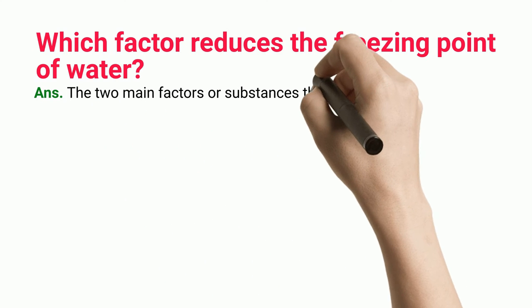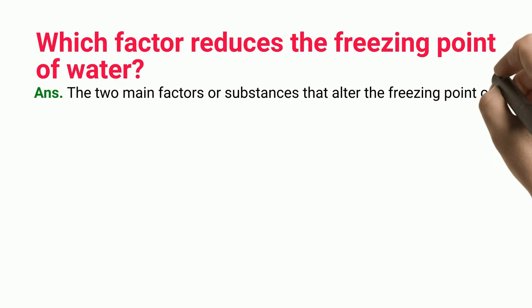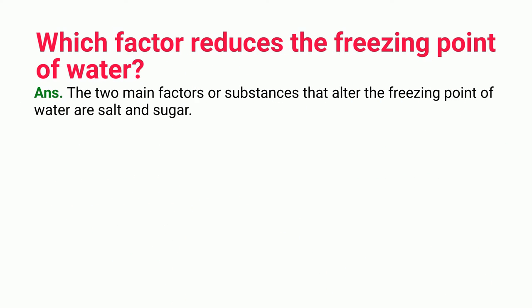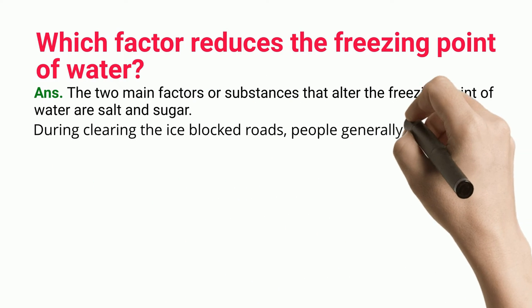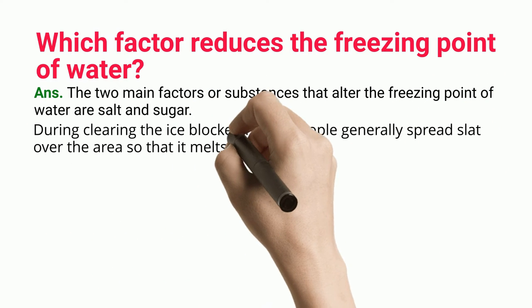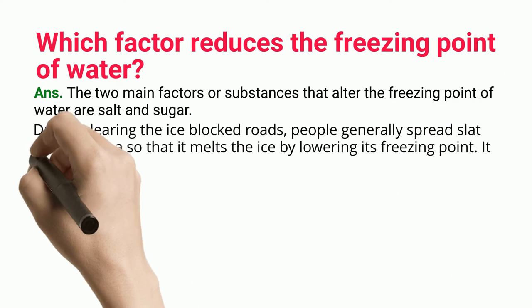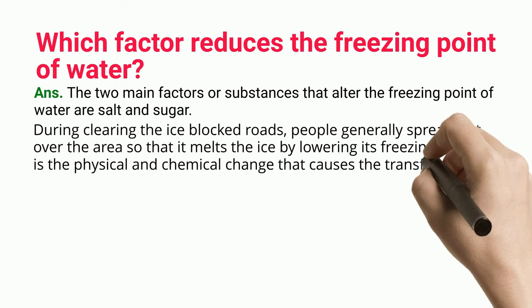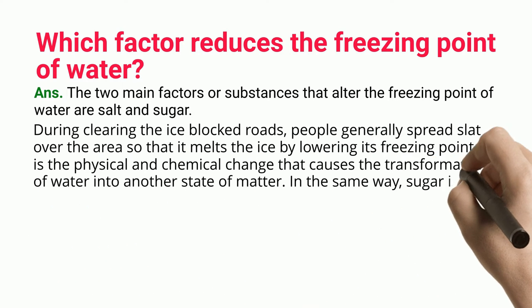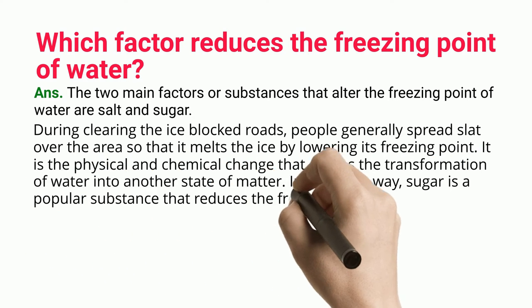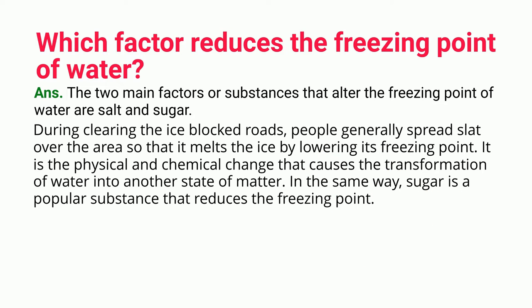Which factor reduces the freezing point of water? The two main factors or substances that alter the freezing point of water are salt and sugar. During clearing of ice-blocked roads, people generally spread salt over the area so that it melts the ice by lowering its freezing point. It is the physical and chemical change that causes the transformation of water into another state of matter.